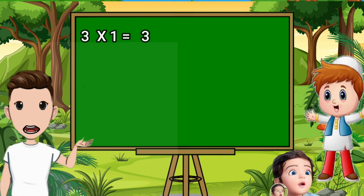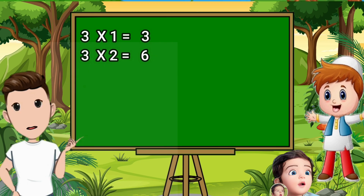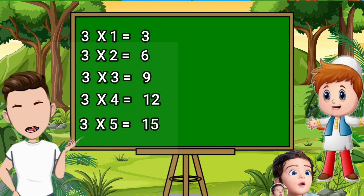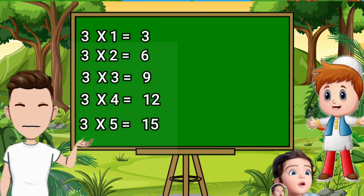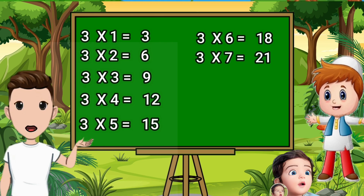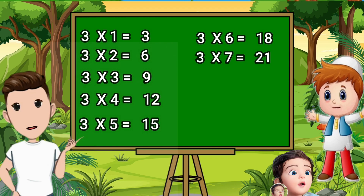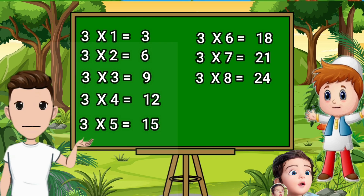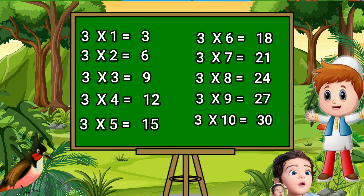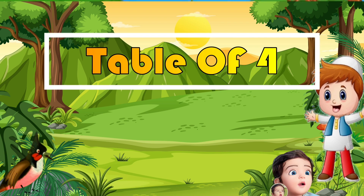Three ones are three. Three twos are six. Three threes are nine. Three fours are twelve. Three fives are fifteen. Three sixes are eighteen. Three sevens are twenty-one. Three eights are twenty-four. Three nines are twenty-seven. Three tens are thirty.